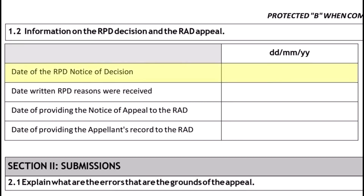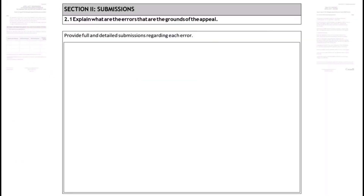Also include the date that you submitted your Notice of Appeal to the RAD. Leave the last box blank — you need to fill it in on the date that you send this package to the RAD. In section 2.1, explain the mistakes you think the RPD made in your case. If you need more space, use additional paper.